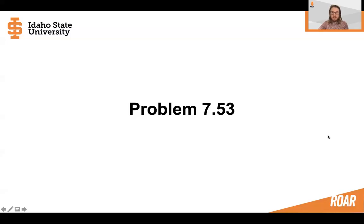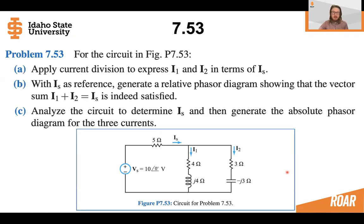Hello everybody. Now let's take a look at problem 7.53, which is in your homework. In this problem, you're going to be doing some drawing of phasors, working with phasor diagrams to represent different currents in the circuit below. There's three parts to this problem.